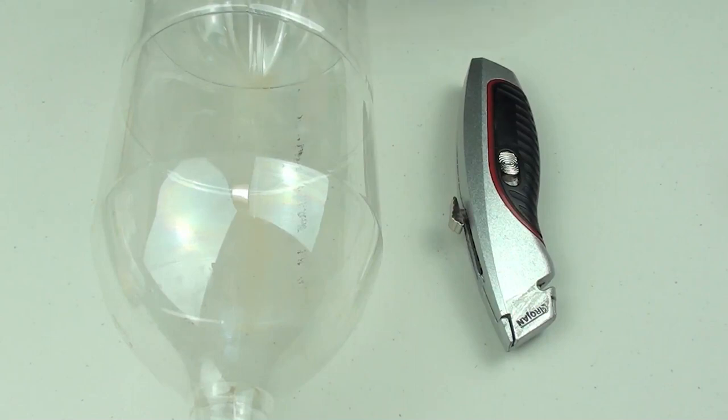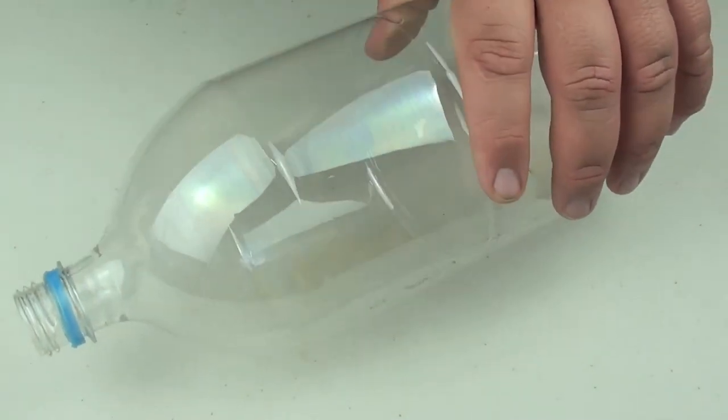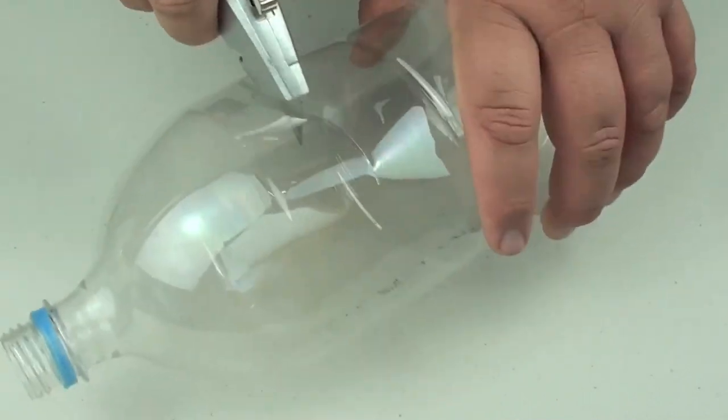To save dashing to the shops to buy another funnel, we are just going to use a simple drink bottle. Grab a knife and the empty drink bottle, just going to cut around it.